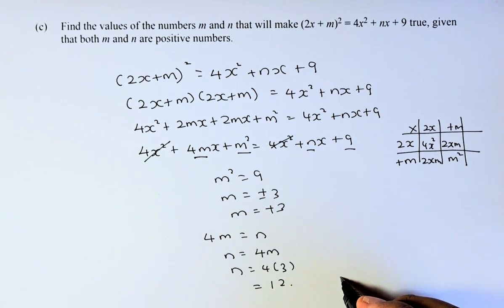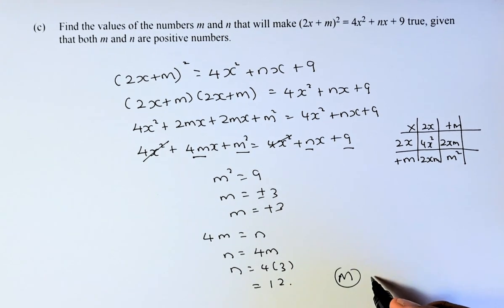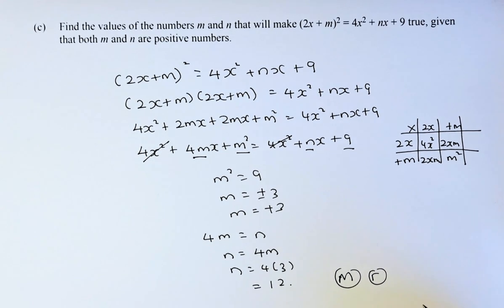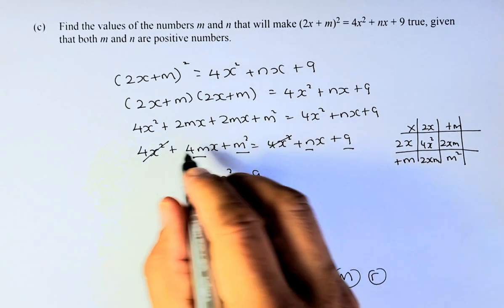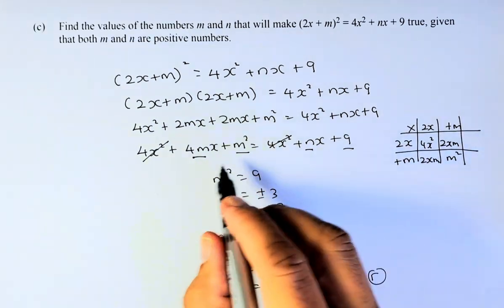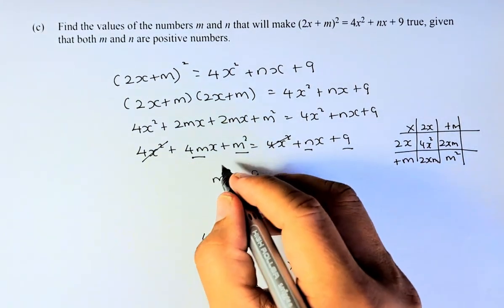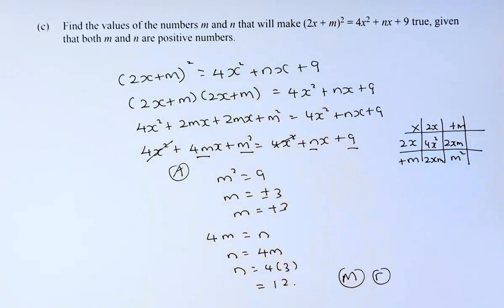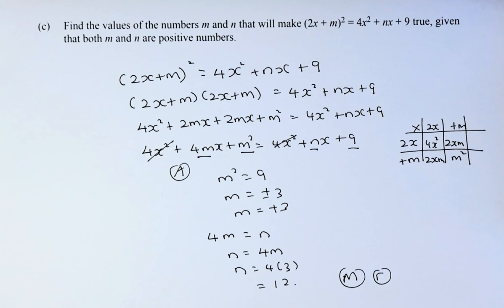If you can get that right, that is a Merit — written as M in NCEA. And the first part, if you can expand to get 4x squared plus 4mx, that will be the Achieved part. So overall, we have done question 1a, 1b, and 1c. We'll continue with the remaining questions in the next video. Hope you have a good day and I'll see you in the next one. Cheers, everyone!